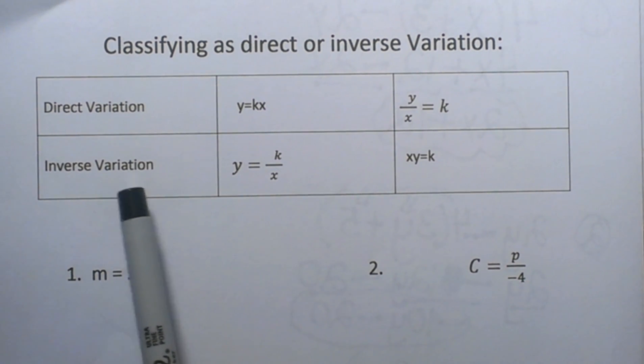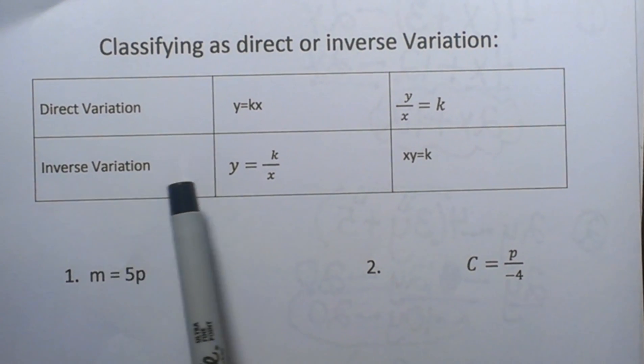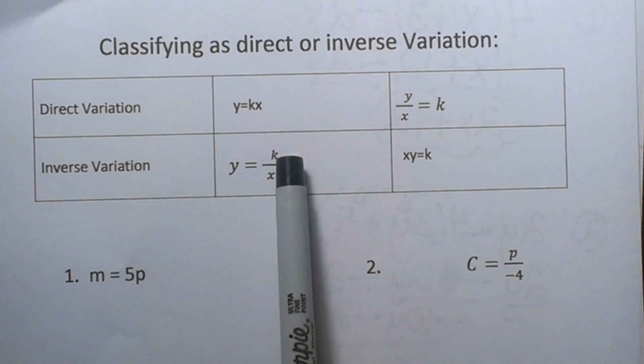The second equation we are going to look at is inverse variation and it is going to take the form of y is equal to the constant k divided by x. So k is being divided by the variable x.